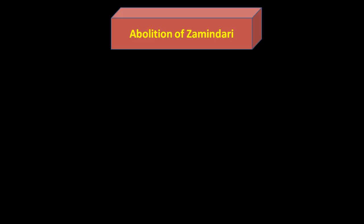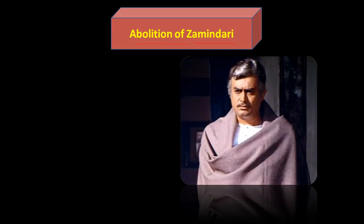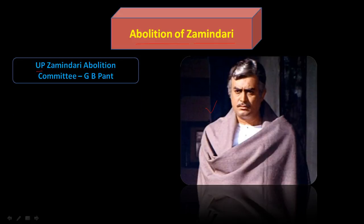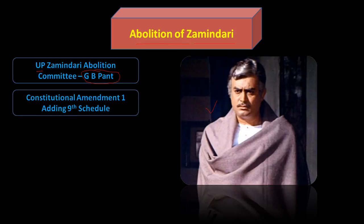Let us first focus upon the abolition of Zamindari. In Uttar Pradesh, a committee was appointed under the chairmanship of Govind Ballabh Pant, and this report served as a blueprint for all the other states. To implement land reforms, a constitutional amendment was done and the 9th Schedule was added.